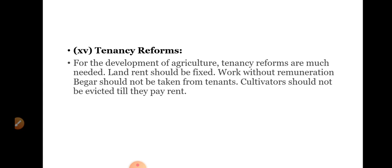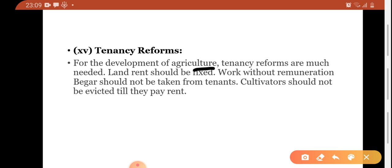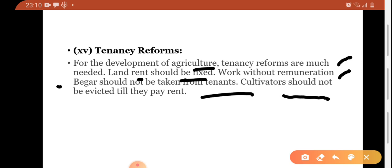Next measure is tenancy reforms. Tenancy reforms are related to land reforms. For the development of agriculture, tenancy reforms are much needed. Land rent should be fixed. Farmers should not be made to work without remuneration and begar should not be taken from tenants. Cultivators should not be evicted as long as they pay the rent.